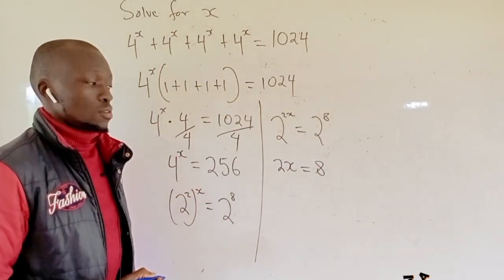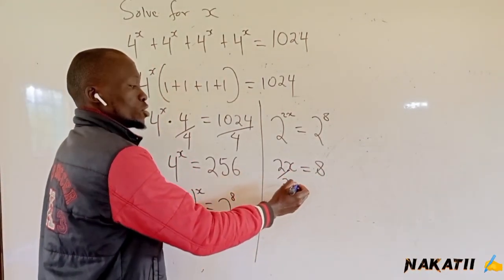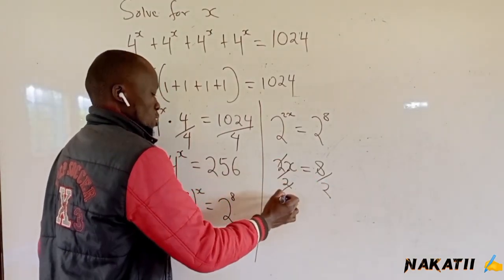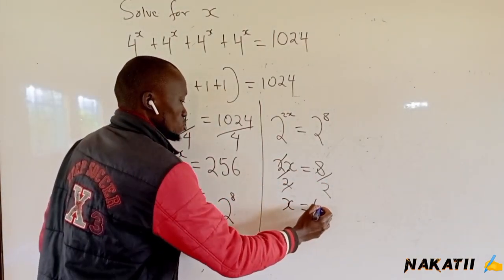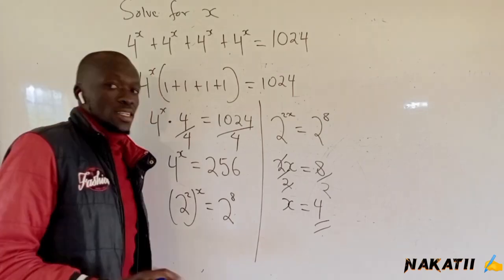To get the value of x, we divide by 2. Our x will be equals to 4, and that is how we solve.